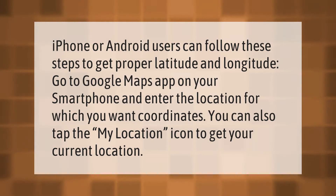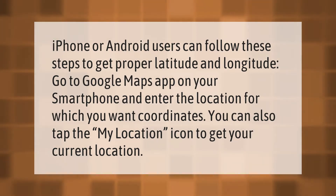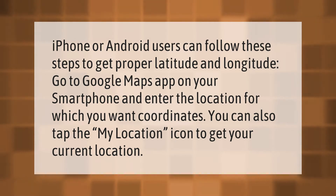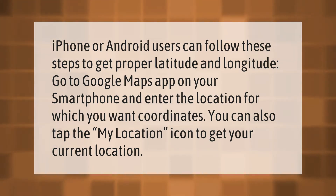iPhone or Android users can follow these steps to get proper latitude and longitude. Go to the Google Maps app on your smartphone and enter the location for which you want coordinates. You can also tap the 'My Location' icon to get your current location.